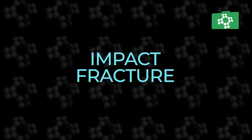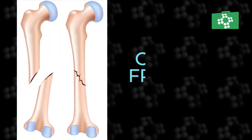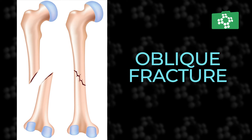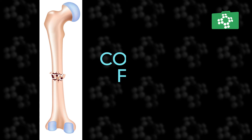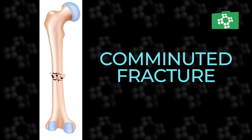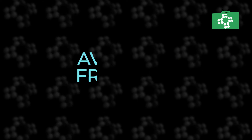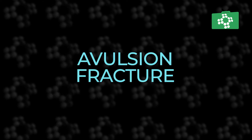Impact fractures are where the broken bone ends are driven together by the force of the impact. Oblique fractures are when the fracture is diagonal across the bone and is common in long bones. A comminuted fracture is where the bone is broken into three or more pieces with bone fragments at the break. An avulsion fracture occurs when a piece of bone is pulled away by a tendon or ligament.